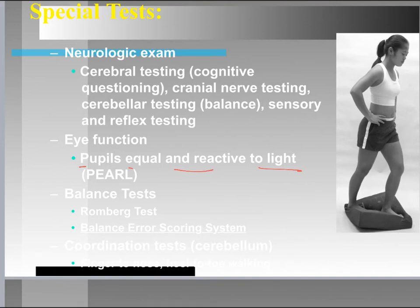In terms of balance tests, we use the Romberg test and the Balance Error Scoring System, or BESS. We also do the finger-to-nose test — most people know it as the sobriety field test — which also applies to head injury assessment to confirm hand-eye coordination.